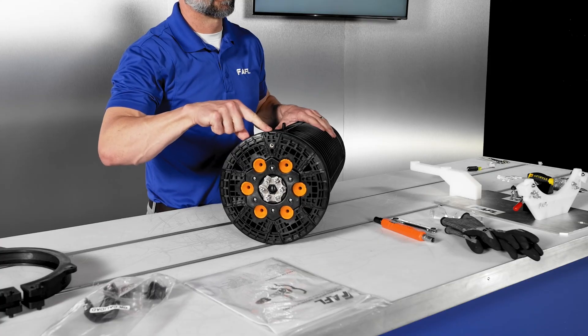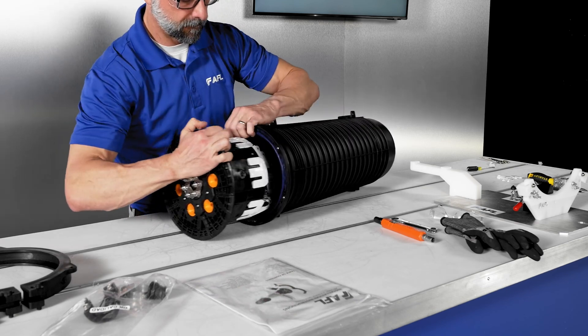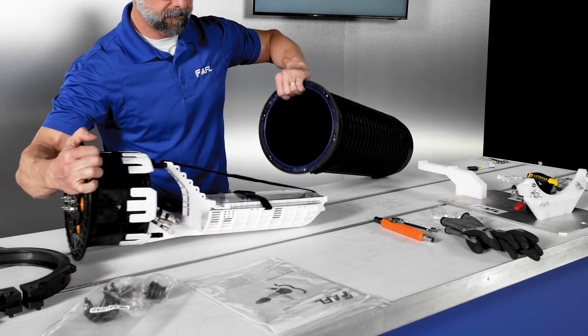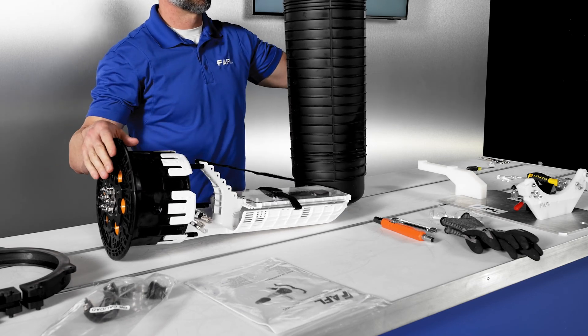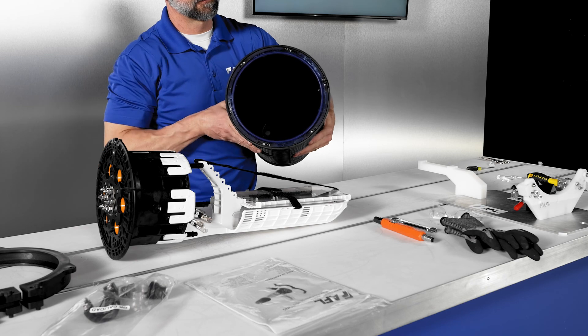With the closure alignment tab at 12 o'clock, slide the apex base from the dome. Note the attached O-ring and store the dome to keep the O-ring clean and free of debris.